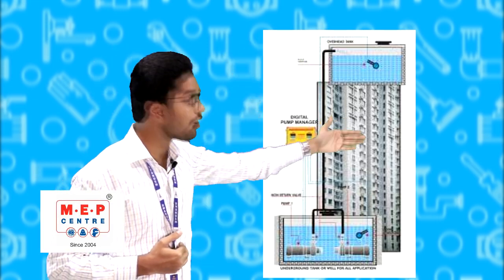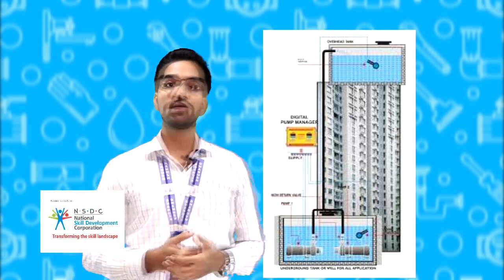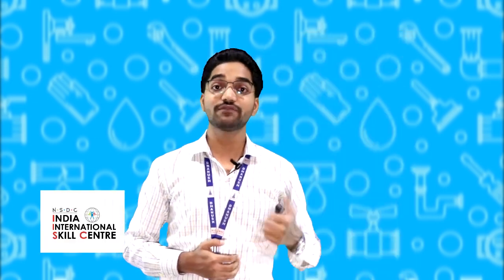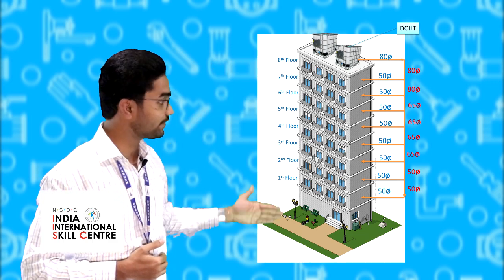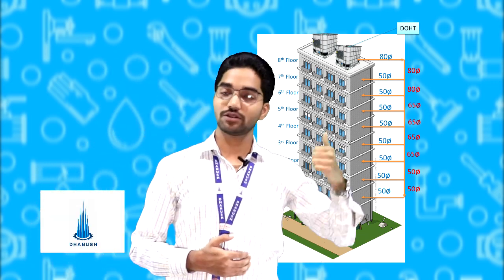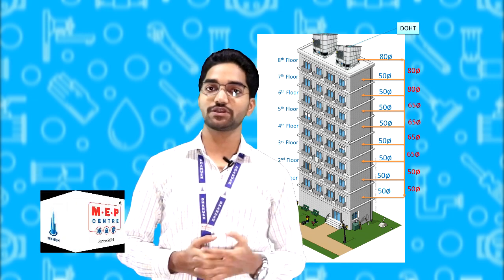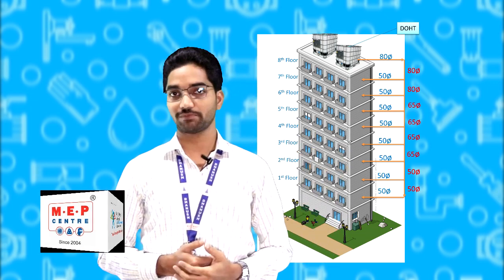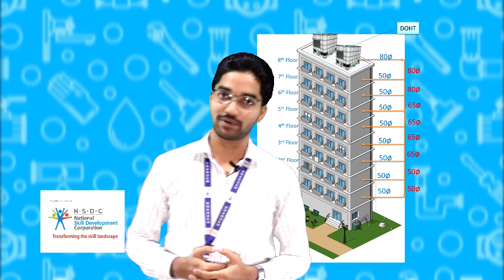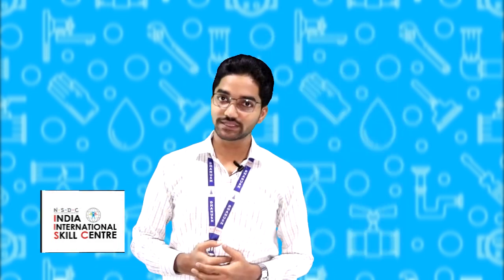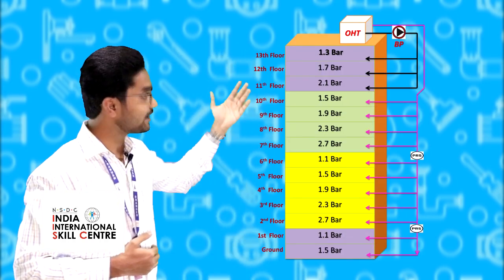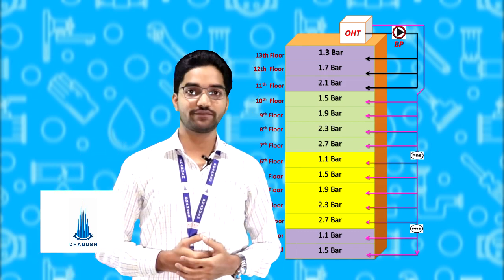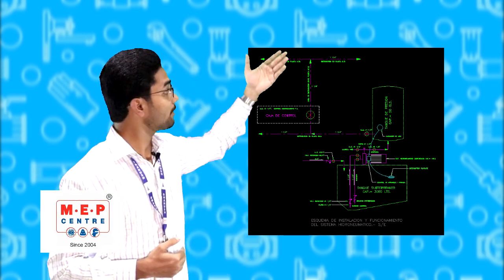The required pressure and discharge must be maintained at every floor. In a gravity system, top floors typically get low pressure. As per NBC standards, the minimum pressure in a water supply system is one bar and the maximum is three bar. If pressure is below one bar, a booster pump must be used. If pressure exceeds three bar on lower floors, a pressure reduction station is used. The hydropneumatic system also involves pressure estimation, pump calculation, and pipe size calculation.